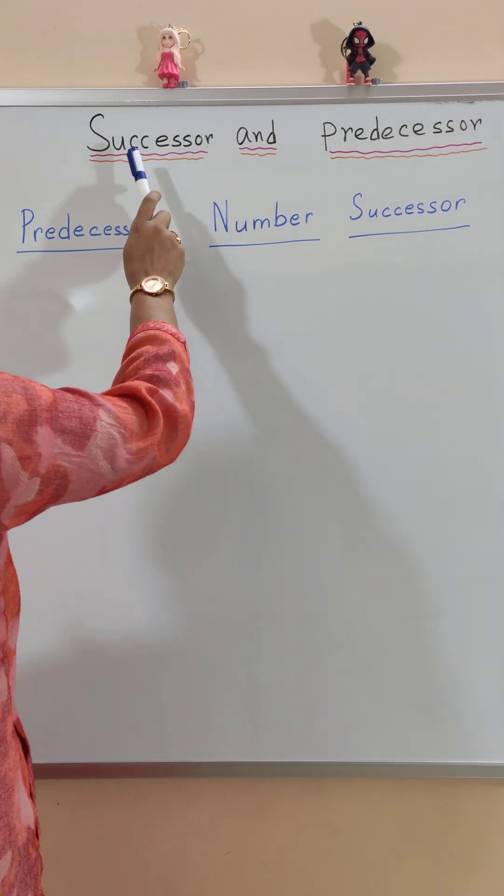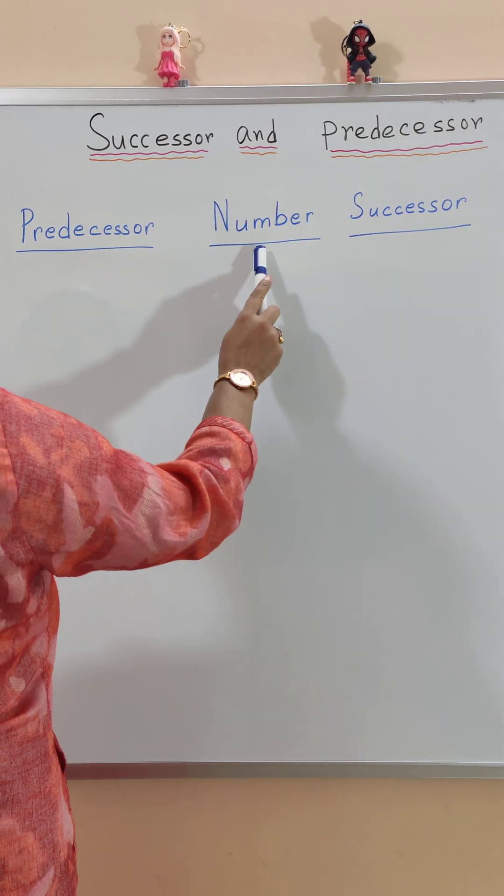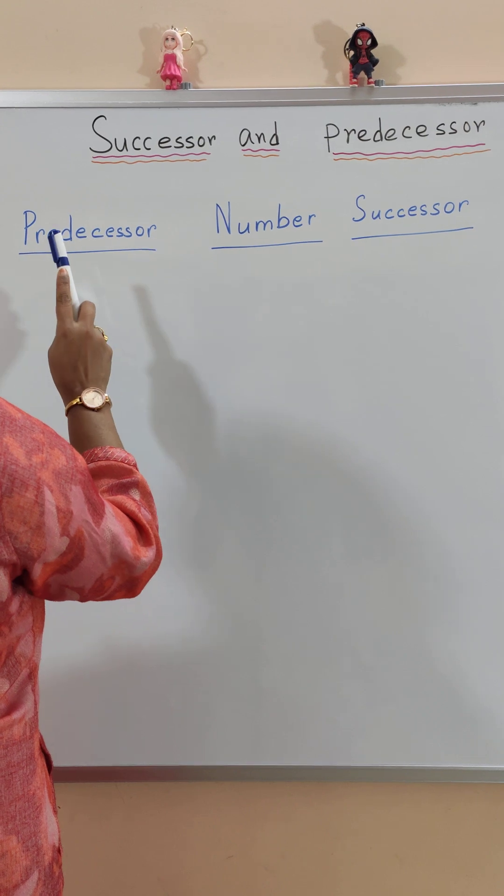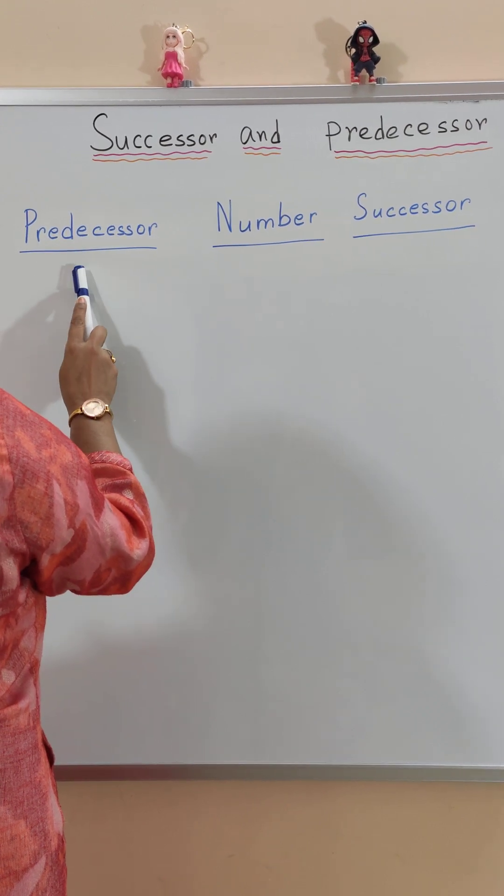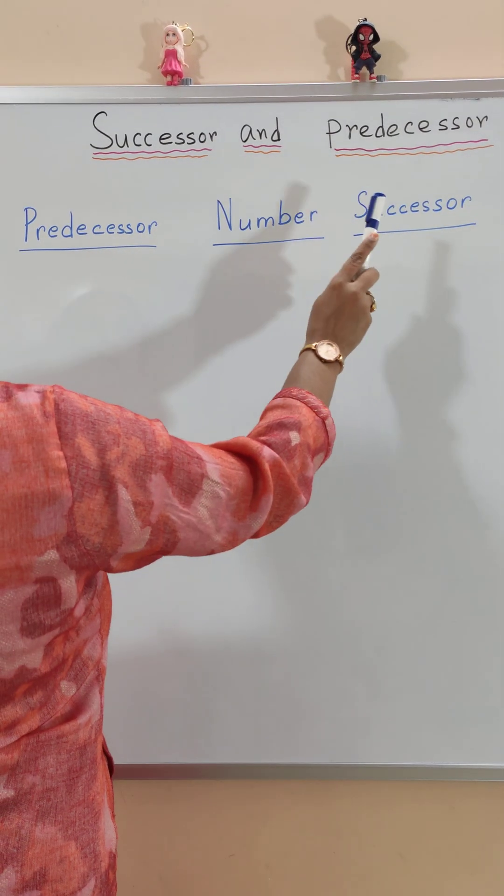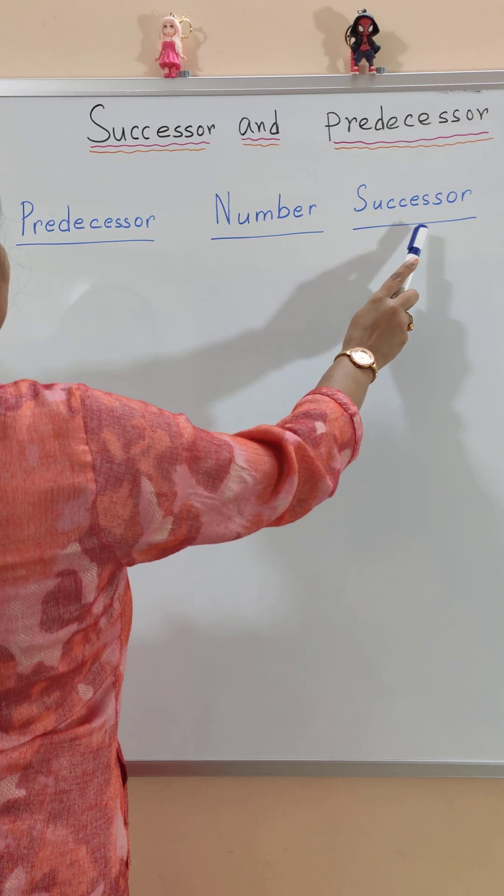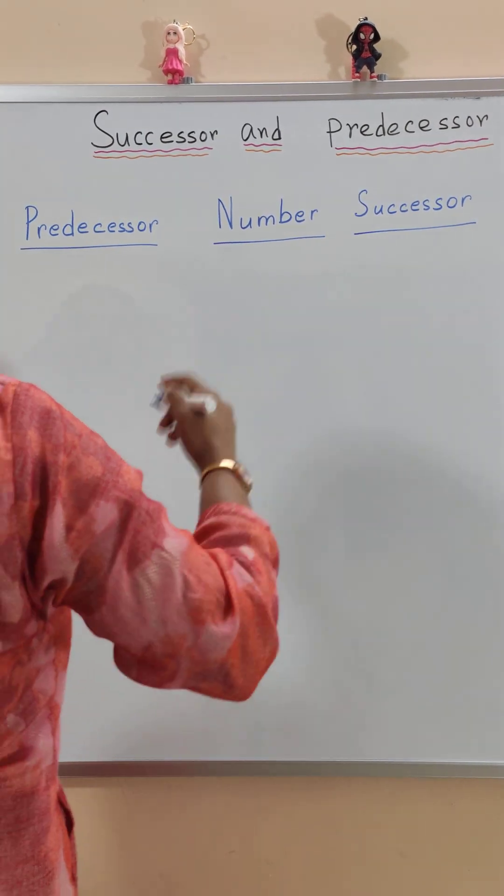Today we will learn how to find the successor and predecessor of a given number. The number that comes before is the predecessor and the number that comes after is the successor. So let me give you an example.